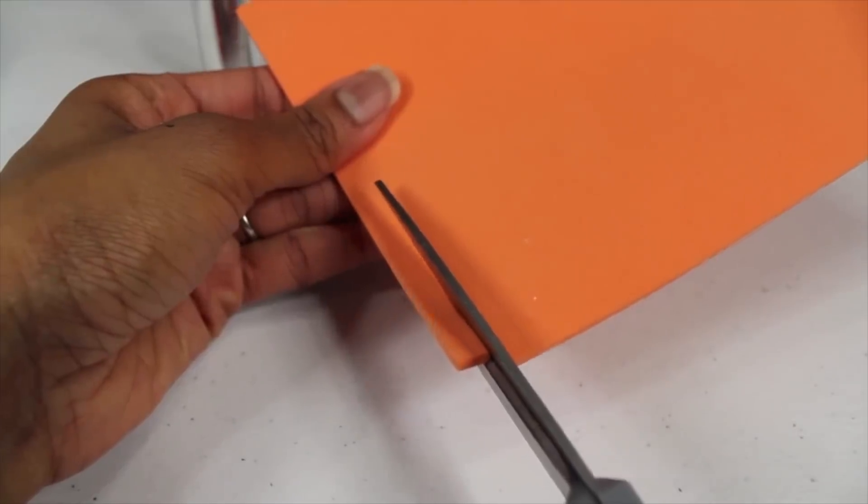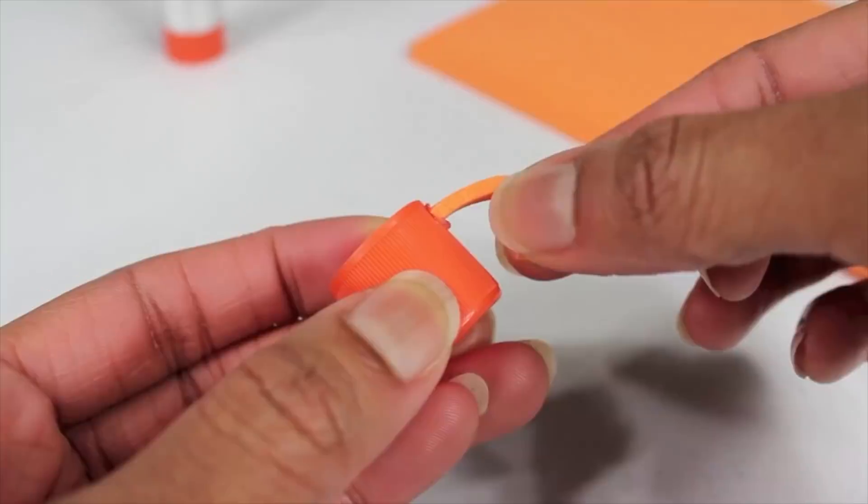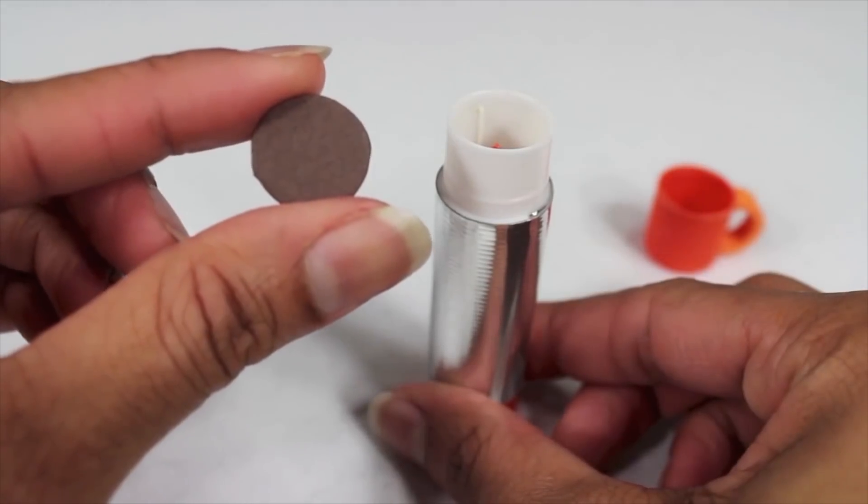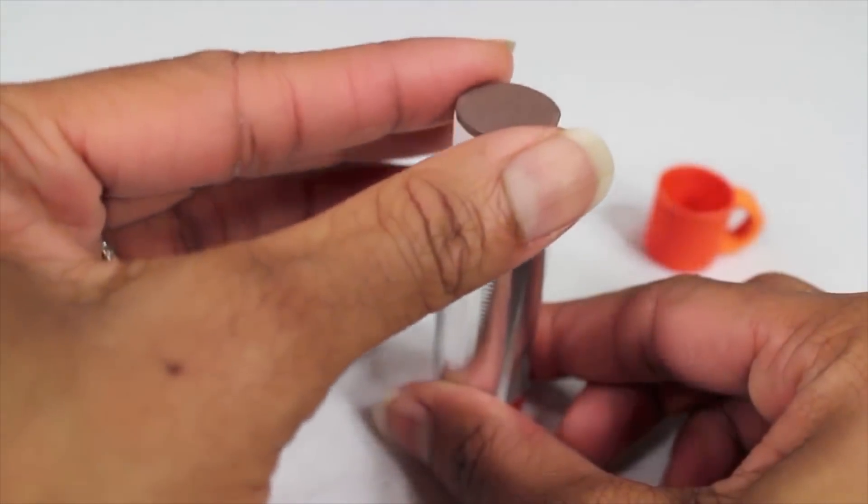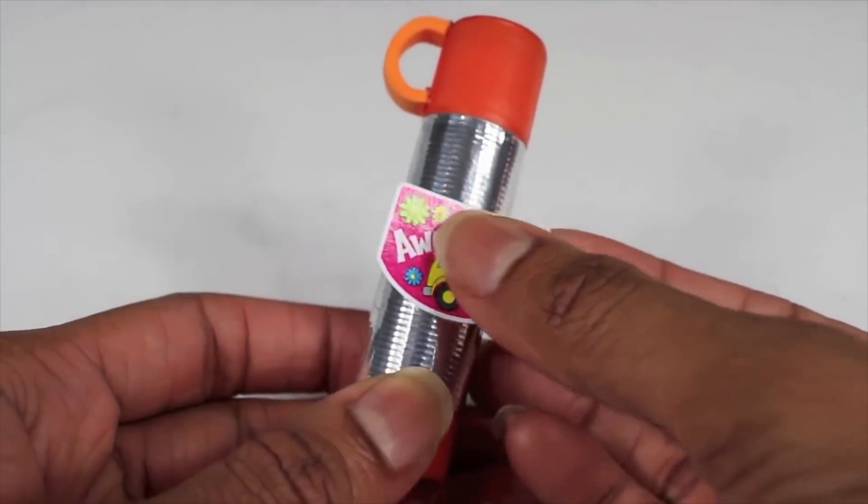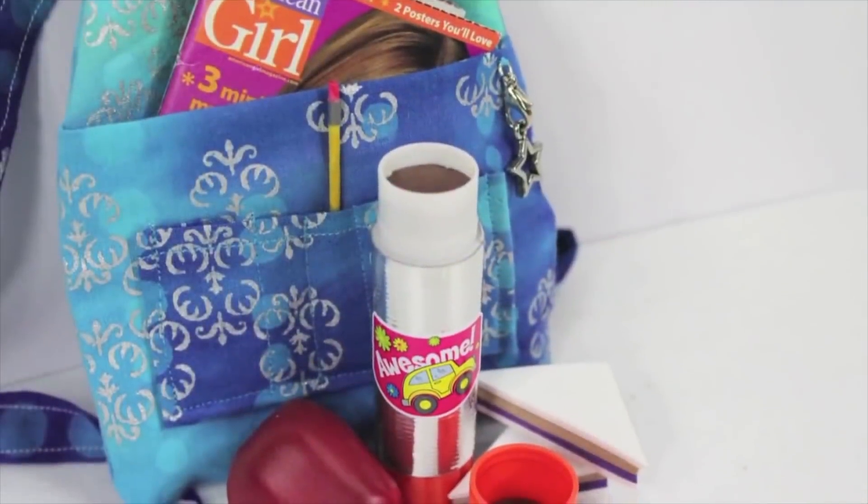Cut a strip of craft foam, glue it to the lid as a handle, cut a circle of brown craft foam for hot chocolate, add a sticker to the front if you like, and you're done. Happy Crafting!